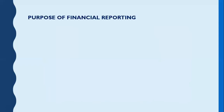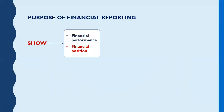The next thing we need to learn is the purpose of financial reporting. The purpose is to show the financial performance and the financial position of the company to the relevant users. In other words, financial performance means what the company did, and financial position means what the company has. So what we're doing is showing what our company did and what a company has to the external users.